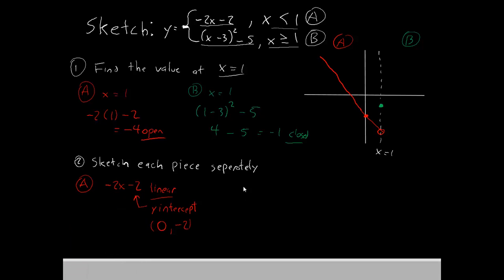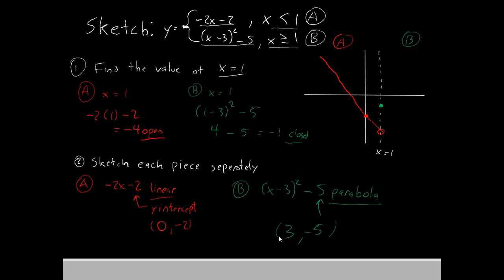Now let's go on to region b. Region b has x minus 3 squared minus 5. If you've watched the previous episode, you'll recognize this is a parabola. The first thing we do with a parabola is find the vertex. The number on the outside is the y-coordinate of the vertex — that's negative 5. The number inside the parentheses gives the x-coordinate, but with the opposite sign, so the vertex is at positive 3. We'll plot (3, negative 5) on the graph and sketch the parabola from there. Make sure you don't cross over into region a — stop at the dotted line. It doesn't have to be perfect; the point is to draw a graph quickly without plotting every single point.